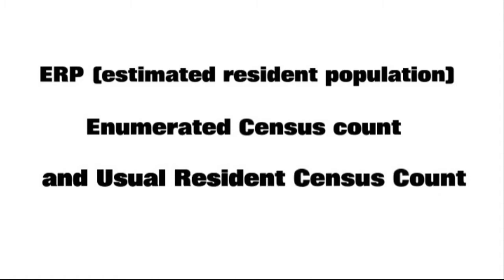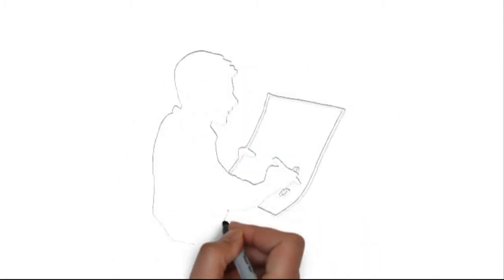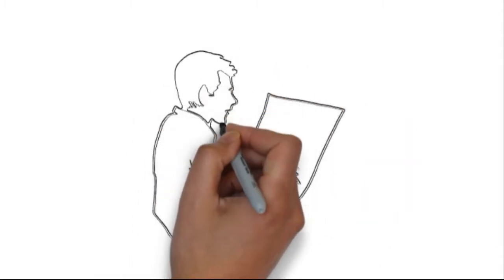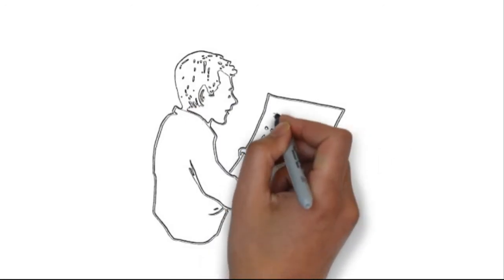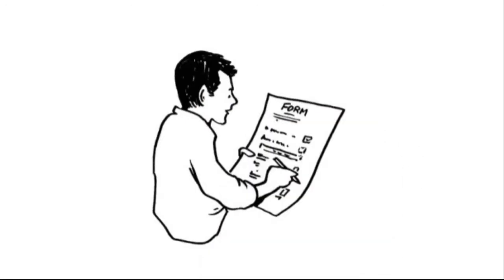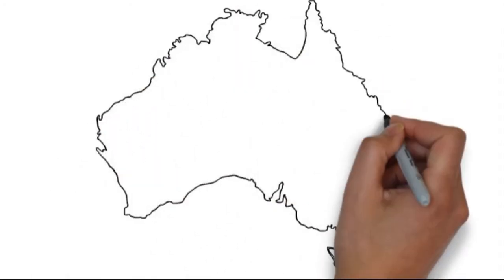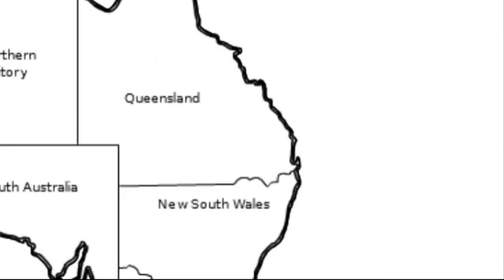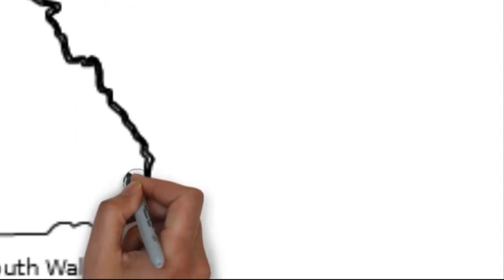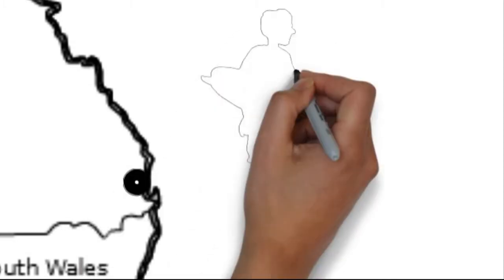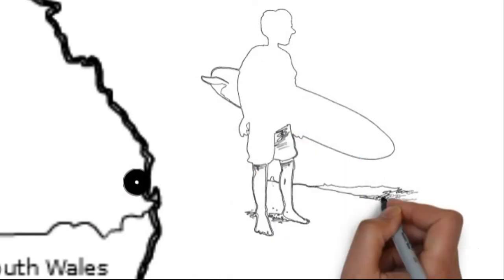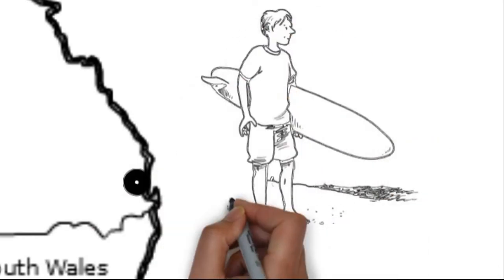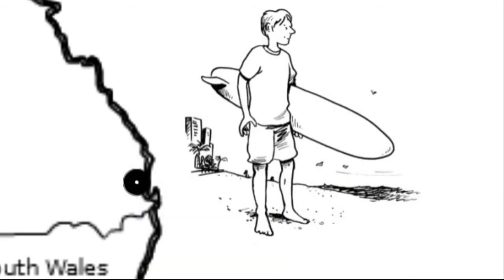When the ABS conducts the census, normally on a Tuesday night in August, they count all the people in Australia that filled in the form, either on paper or online. The census asks people to state where they spent census night, even if they weren't at home, as well as what their usual address is. So if Archie was on vacation on the Gold Coast on census night, he would be counted as part of the Gold Coast population. This is known as the enumerated census count — it registers all the people who filled in the form and where they were on census night.